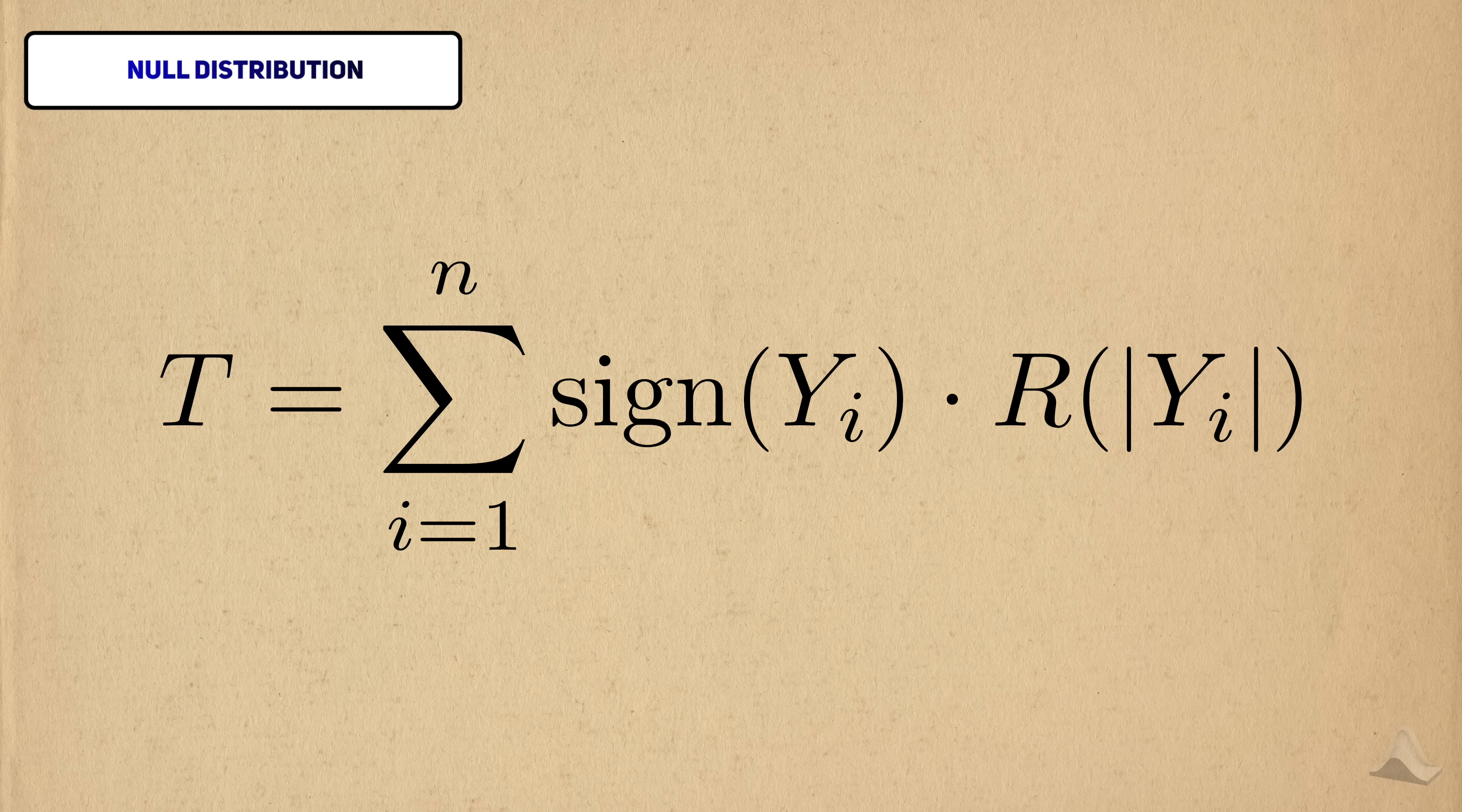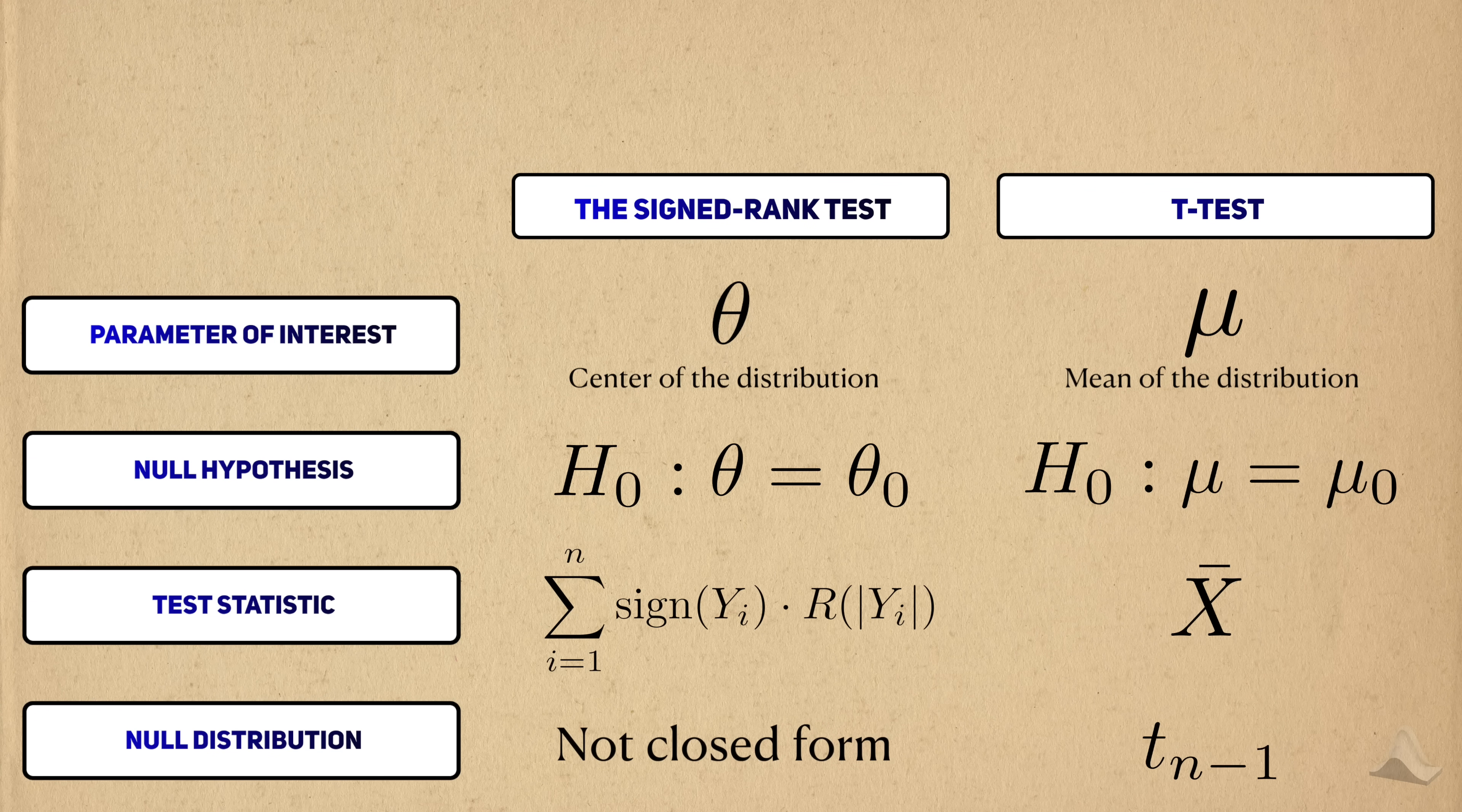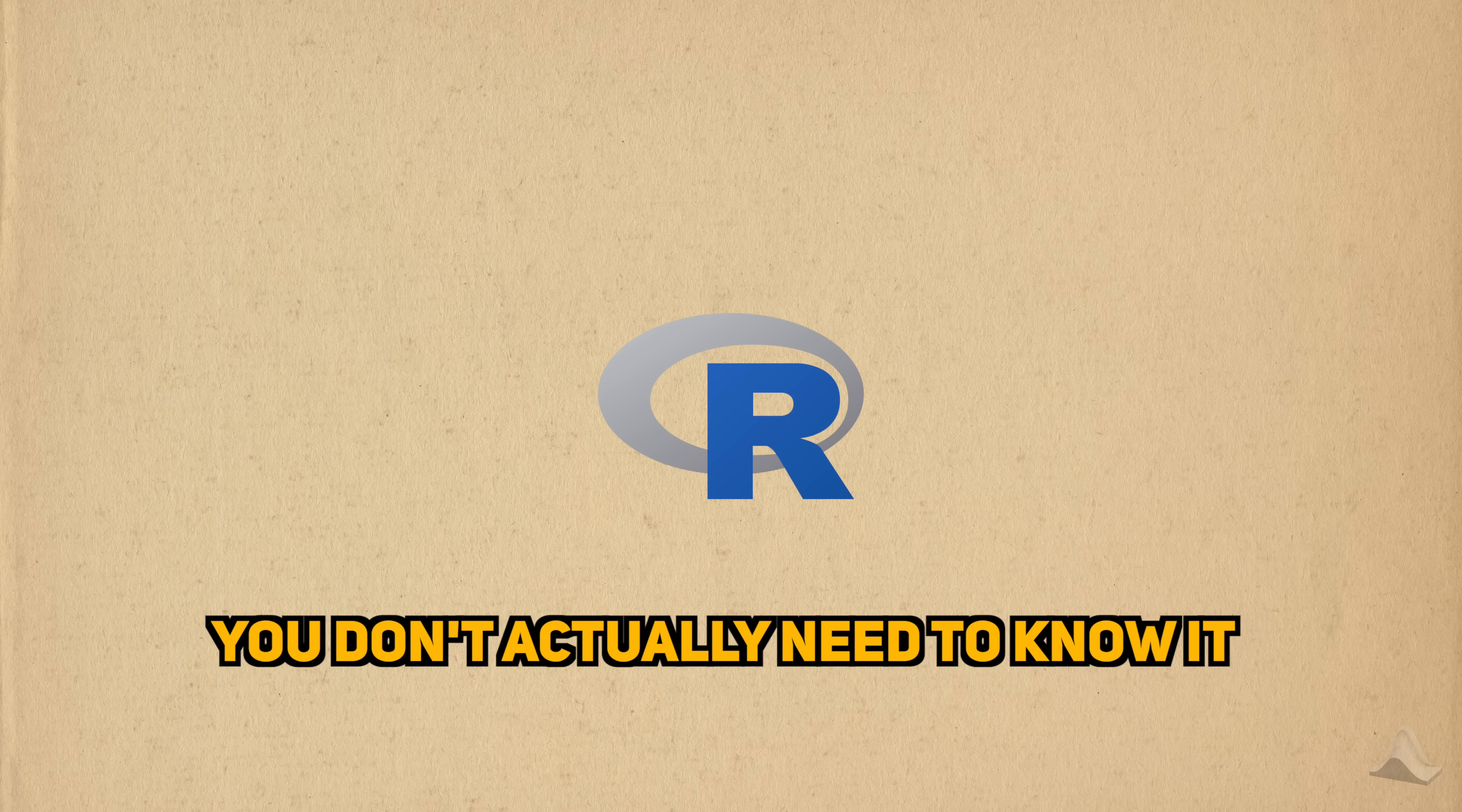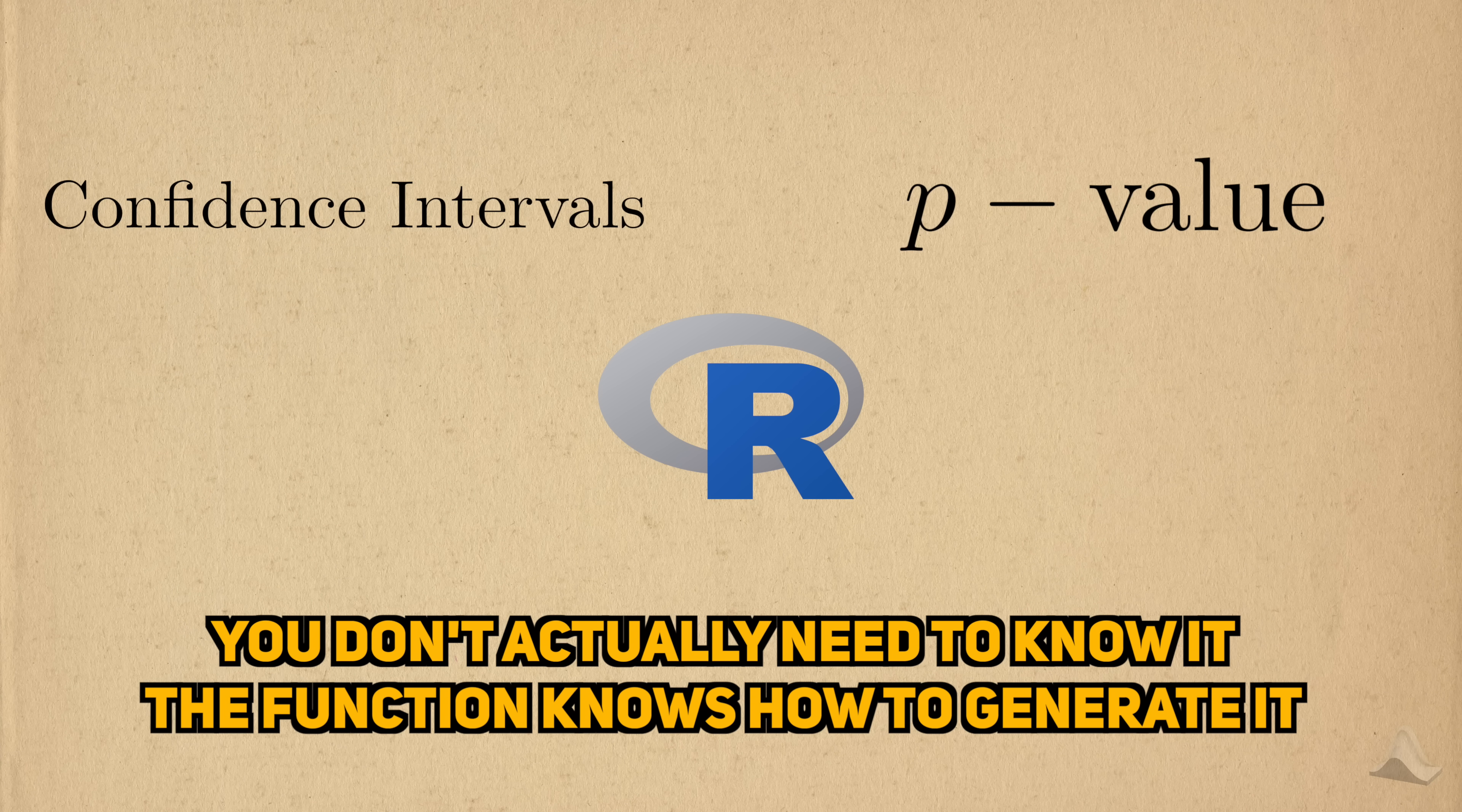The last element of the NHST we have to cover is the null distribution. Unfortunately, the null distribution of the signed rank test doesn't have an easy closed form. Unlike the t distribution, there's no name for this distribution or even an equation to describe it. But if you're conducting this test in R, and you should be, you don't have to worry about it. The function itself calculates it for you, and by extension can calculate the necessary p-values.